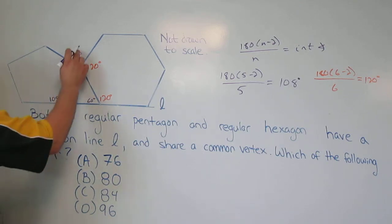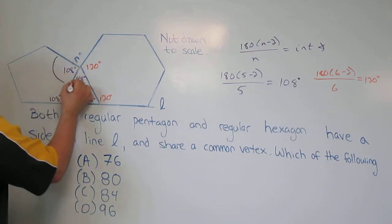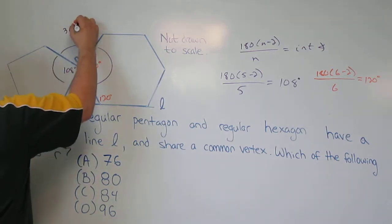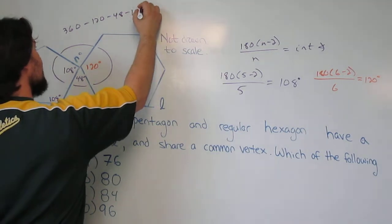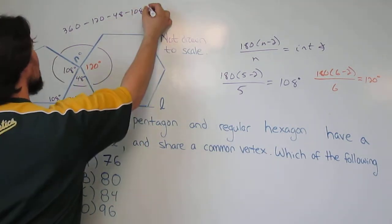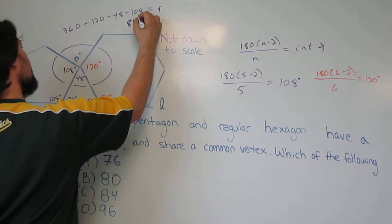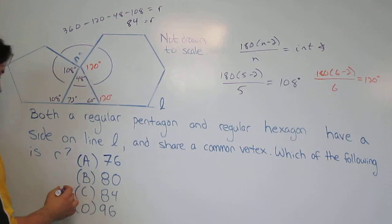Final step to solve for that top. We know that the entire number of degrees around any point is 360. So, 360 minus 120 minus 48 minus 108. We're going to figure out what that equals. Alright. So, 84. 84 degrees is our answer.